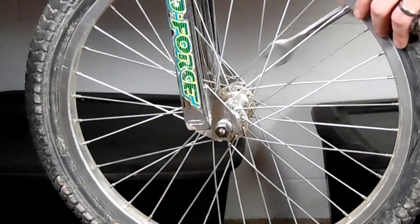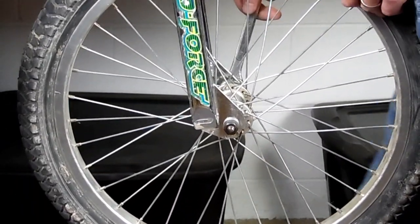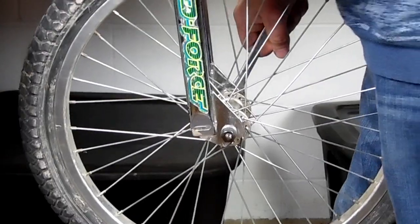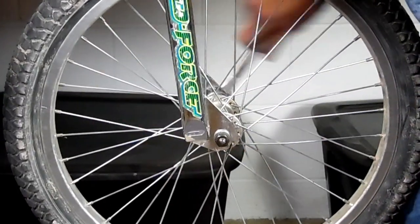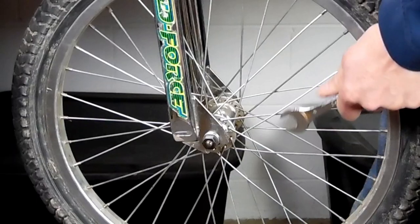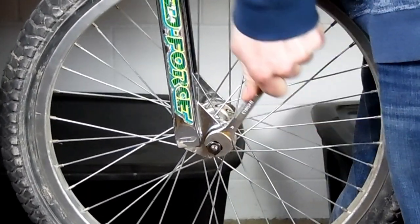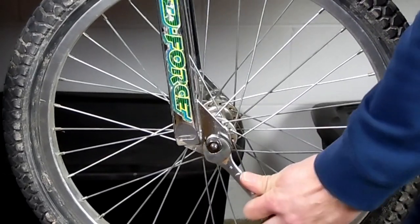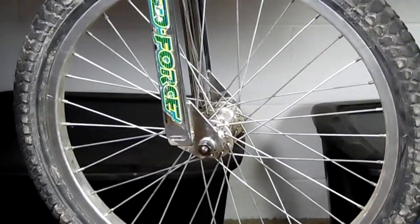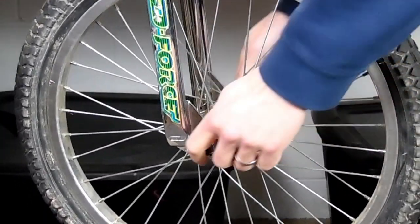So let's get started. The first thing we're going to need to do is remove the wheel from the bike by loosening the axle nuts. Now if you have pegs, you'll need a ratchet with an extension, and if you're running brakes, you'll either have to let some air out of the tire or loosen your brake up to get your wheel off, most likely.